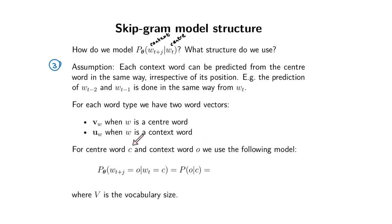For a center word C and a context word O, we're going to use the following model structure. We want the probability of the context word given the center word — I'll sometimes write it out concisely because the notation gets a little bloaty.